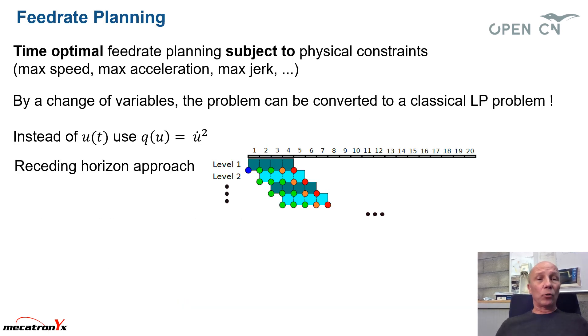Let's talk a little bit about feed rate planning. So feed rate planning is time domain. And we seek to have a trajectory, which is time optimal, subject to physical constraints as maximum speed per piece, maximum acceleration per axis, maximum jerk per axis.